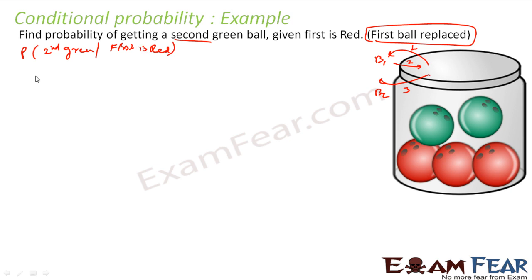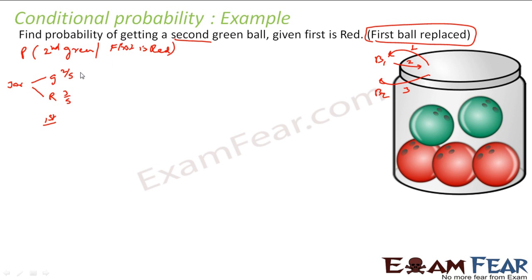Let's do the same thing in a diagram. I have the jar and I take out one ball — the first ball. It can be green or it can be red. The probability of getting green is 2 by 5, and the probability of red is 3 by 5. Now I put the ball back.